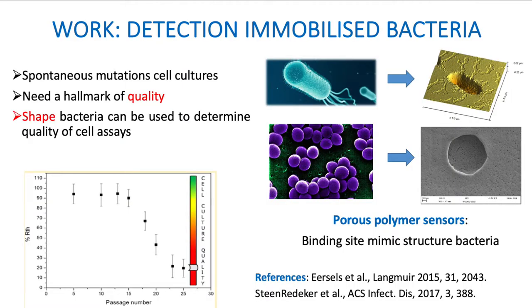If you're working with cell culturing at the university, you have to imagine that these cells mutate over time, as seen with continuous operation. It's not always common to test what is happening to the cells — normally you use a culture for a couple of months and then dispose of it, knowing it degrades over time. There's no real hallmark for cell quality, but looking at mutations in the shape of bacteria can be used as a hallmark of culture quality.